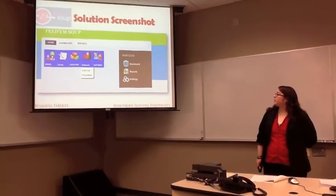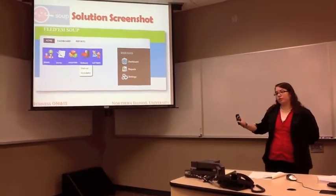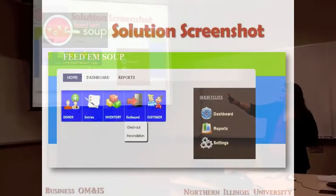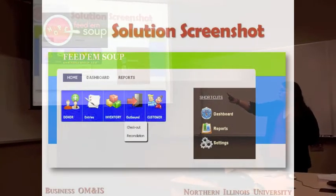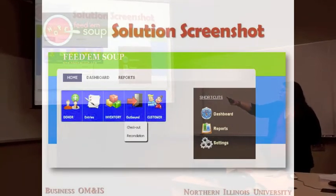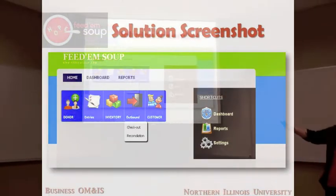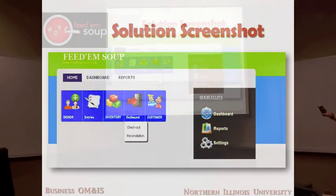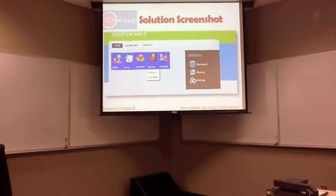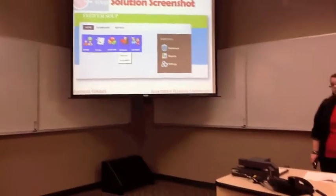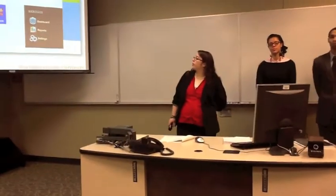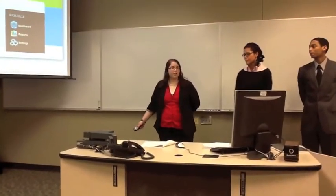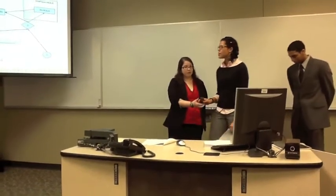This is a quick screenshot of what our proposed system is going to look like, where they have their main menu with donors, entries, inventory, outbound, and a dashboard, which is going to have some graphs and stats on some of their most frequent inventory items. I'm going to pass it to Marina to finish up with the operations.